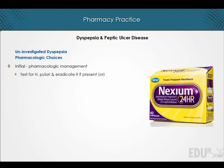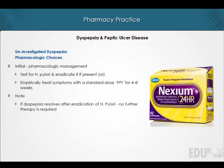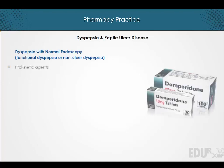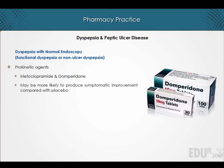Initial pharmacologic management of dyspepsia focuses on testing for H. pylori and eradicating it if present, or empirically treating symptoms with a standard dose of proton pump inhibitor for four to eight weeks. If dyspepsia resolves after eradication of H. pylori, no further therapy is required. In dyspepsia with normal endoscopy, prokinetic agents such as metoclopramide and domperidone may be more likely to produce symptomatic improvement compared with placebo.